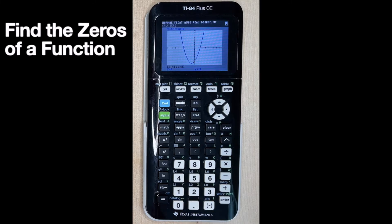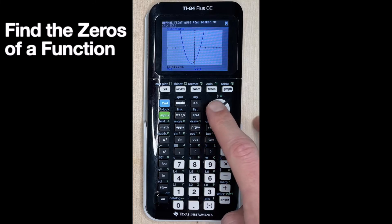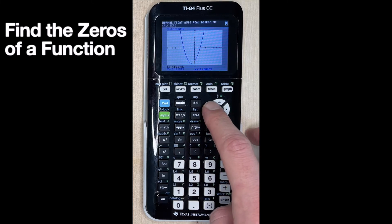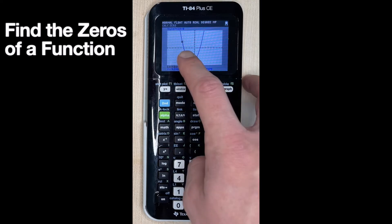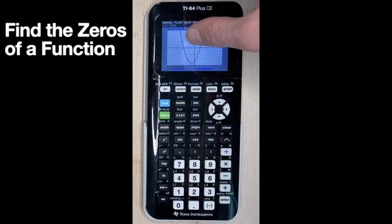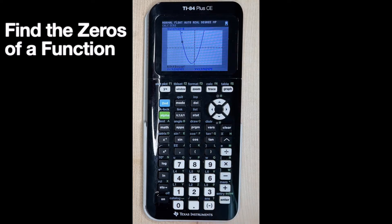Okay, so now our calculator needs us to give it some information. It says left bound. So we're going to move our cursor, this flashing cursor that we see right here, to the left side of our first x-intercept or our first zero. Okay, so here's our first x-intercept right here. So to the left side would just be above the x-axis. I'm going to hit enter, and now it says right bound. So now I'm going to move this cursor below that x-intercept and hit enter again.